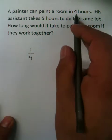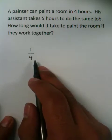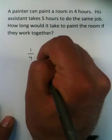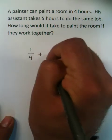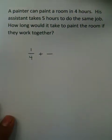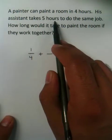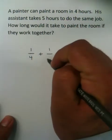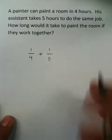So basically, one over what you had would be done in one hour. So what happens is, you're going to add that to how long it takes the other painter or assistant to paint the room. You'd say, well, how much does he get done in an hour? Well, he gets one-fifth done in an hour because it takes five hours for him to complete.